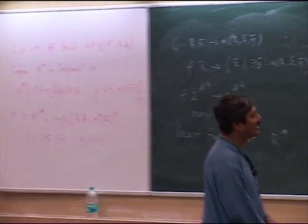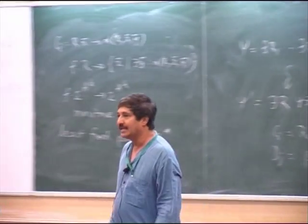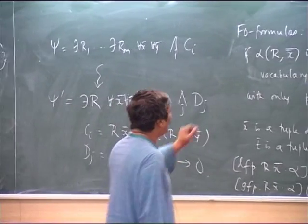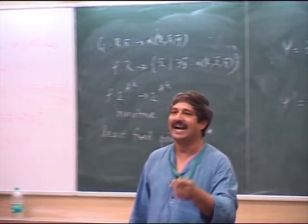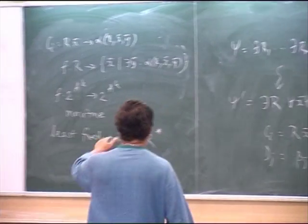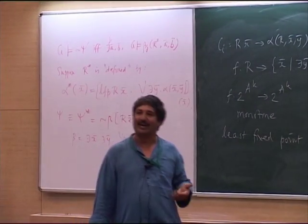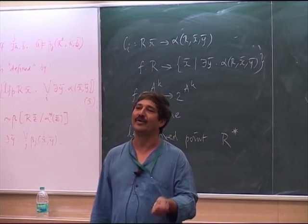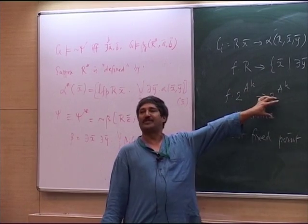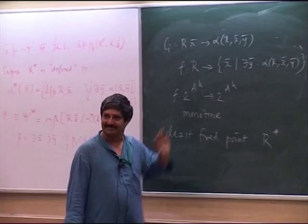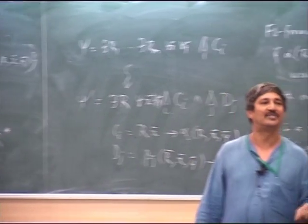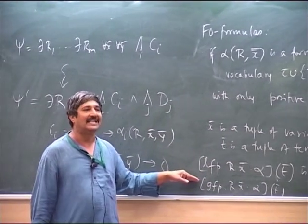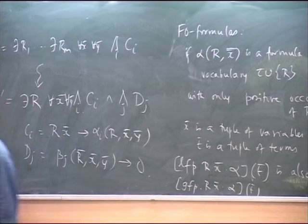It is a quantifier of a particular form. Whenever you have a formula with R — think of it as defining an update operator on A^k. You plug in any R and it produces a bunch of tuples. Since occurrences are positive, the operator is monotone. A monotone operator on a power set under the inclusion ordering has a least fixed point. The meaning of LFP_{R,x-bar} alpha(t-bar) holds in structure A if and only if t-bar belongs to the least fixed point of the associated operator F_alpha.